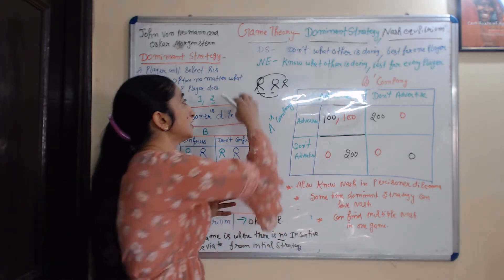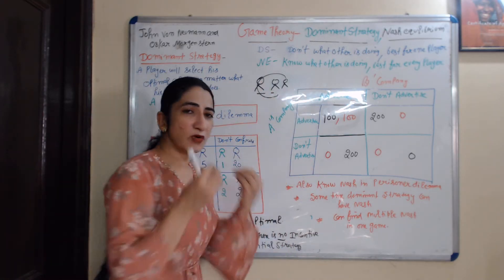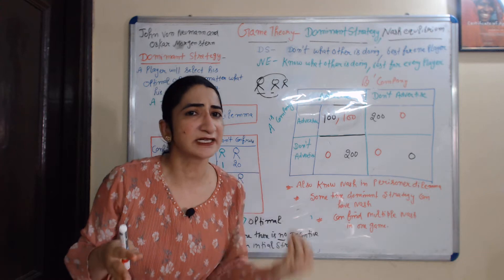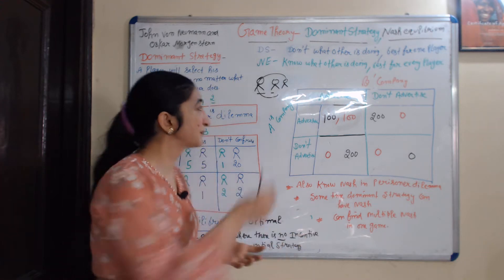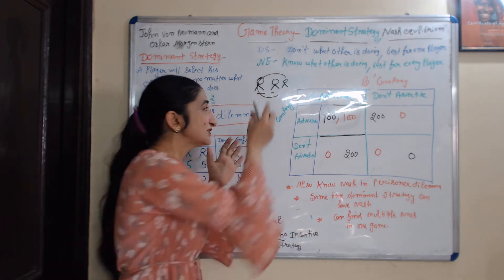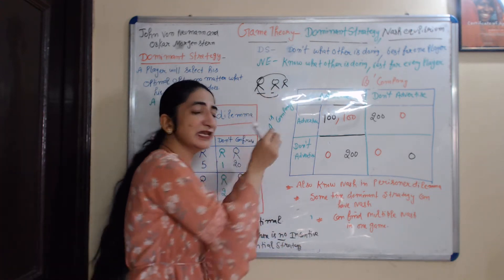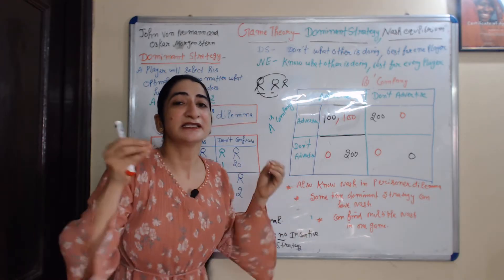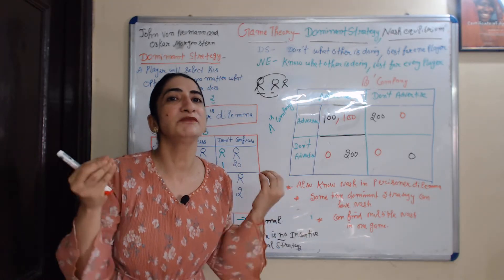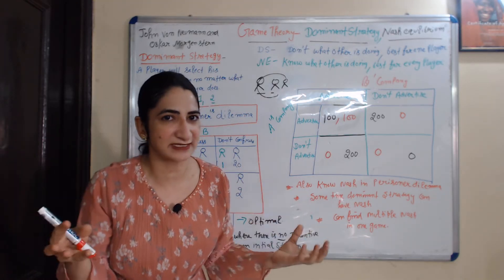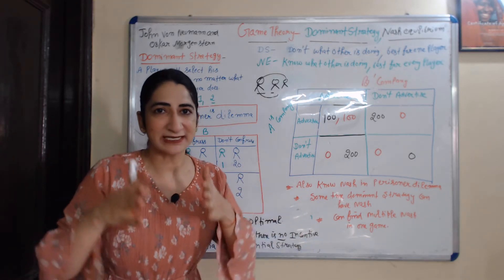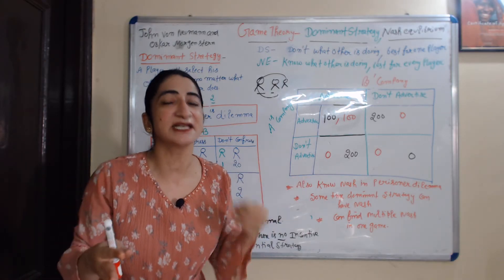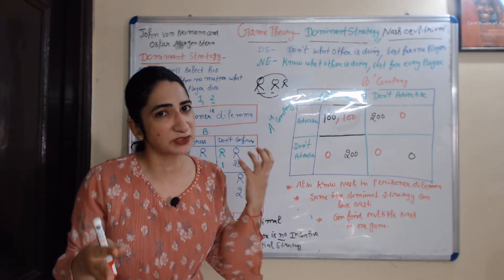For example, two or more opponents stuck in any conflicting situation — game theory helps them to make a decision. So we can say that game theory helps to make a decision in a conflicting situation.